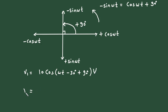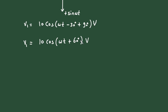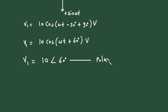Simplifying, V1 = 10 cos(ωt + 60°) volts. This is the standard form in time-domain format. Converting to the equivalent phasor domain format, V1 = 10∠60° volts. This is the polar form of the phasor.